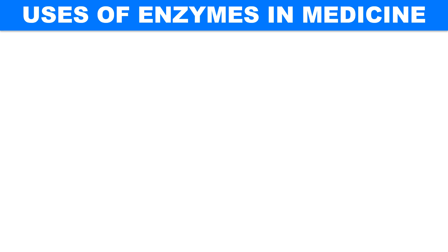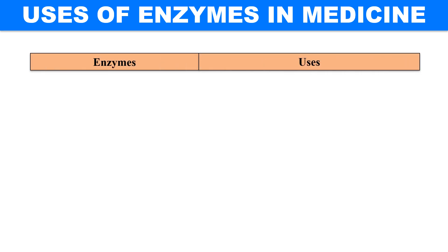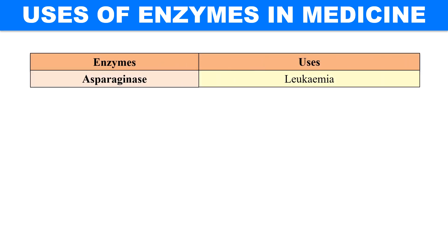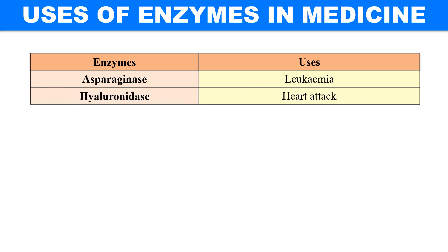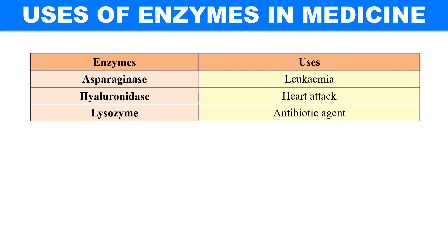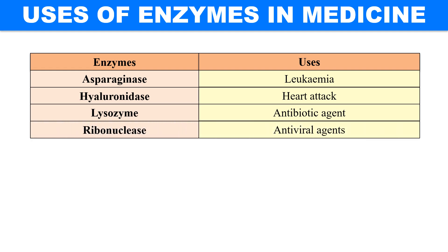Next is the use of enzymes in medicine. Certain enzymes are used for the treatment of many diseases. Asparaginase is used in the treatment of leukemia, a blood cancer in which the number of white blood cells increases. Hyaluronidase is used in cases of heart attack. Lysozyme has the property to kill bacteria, so it is used as an antibiotic to treat infections. Ribonucleases have antiviral activity — they stop virus growth — and are used as antiviral agents.